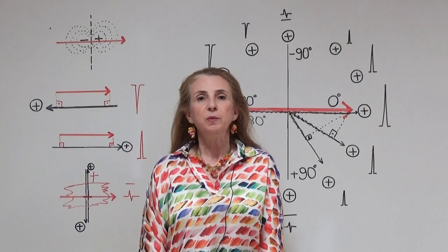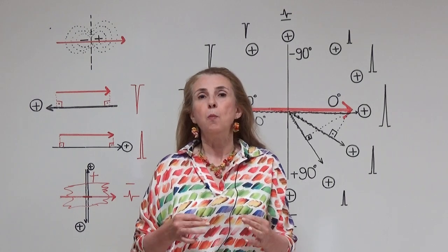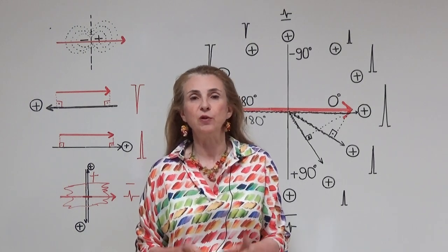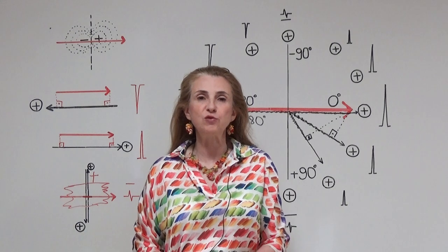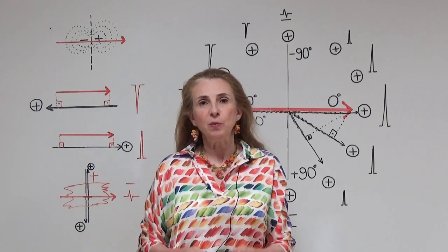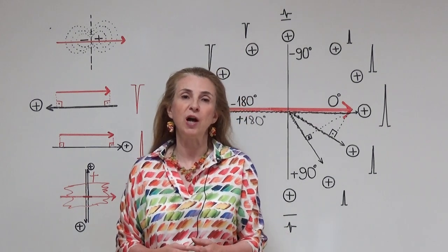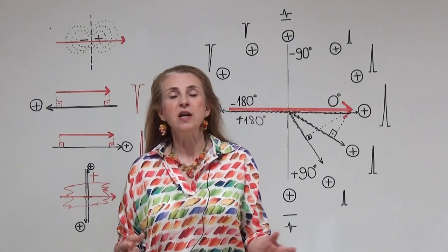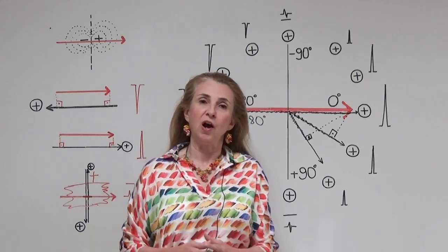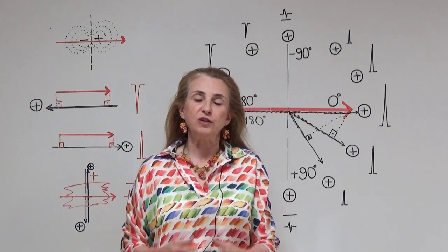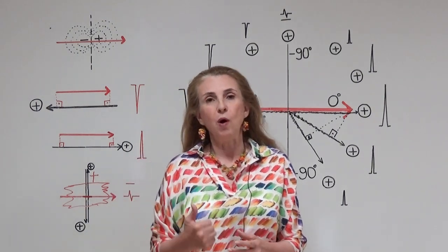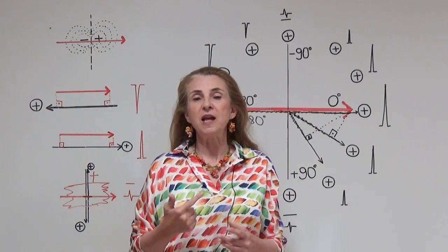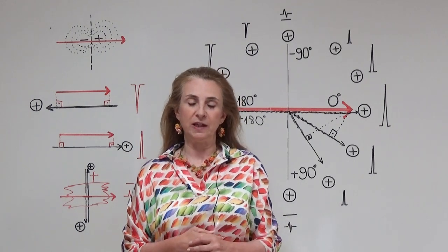In electrocardiography, the position of the positive side of the dipole and the positive electrocardiography electrodes relative to each other is extremely important because this determines the size and the shapes of the electrocardiography waves. This relationship is not constant — it is changing. There are two types of conditions that change this relationship: one is that the position of the positive electrode can change, and two is that the position of the positive end of the dipole can change.